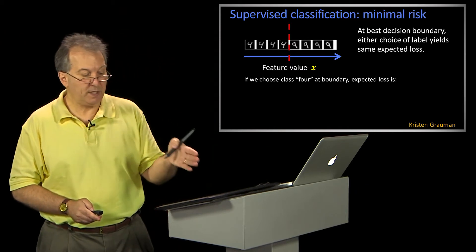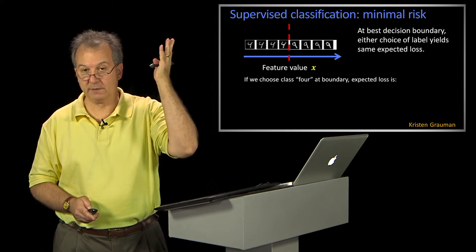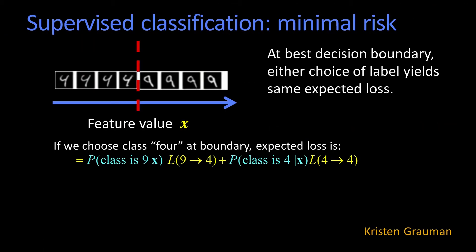So if we pick the label four at that boundary, then the expected loss is what? Well, it's just what is the probability that it's really a nine, and that I call it a four, the cost of calling it a four.